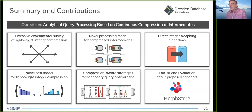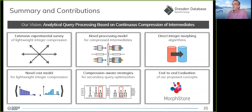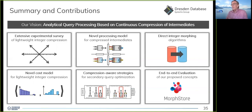An audience member comments that the talk was excellent and raises a question about the use of generated data. From experience, real-world data does not exhibit homogeneous access patterns — data in practice may have some nicely sorted behavior for a few hundred elements followed by purely random segments, which makes compression choice difficult and finding the optimal compression using a model extremely difficult. The speaker responds that in their experimental survey they considered many different data characteristics — different data distributions, different run lengths, different amounts of outliers — to capture a range of things that could happen in practice.